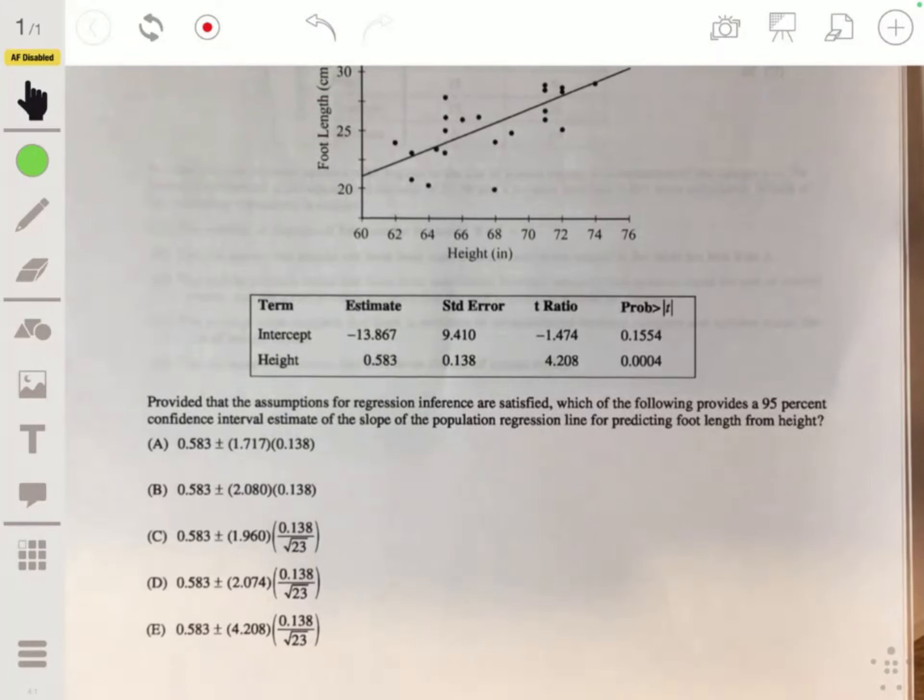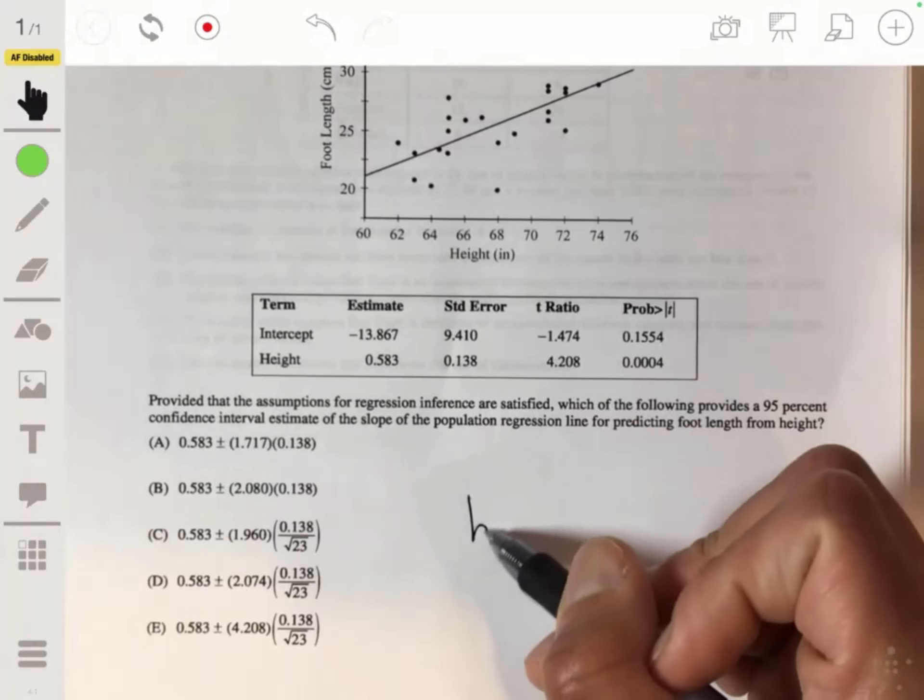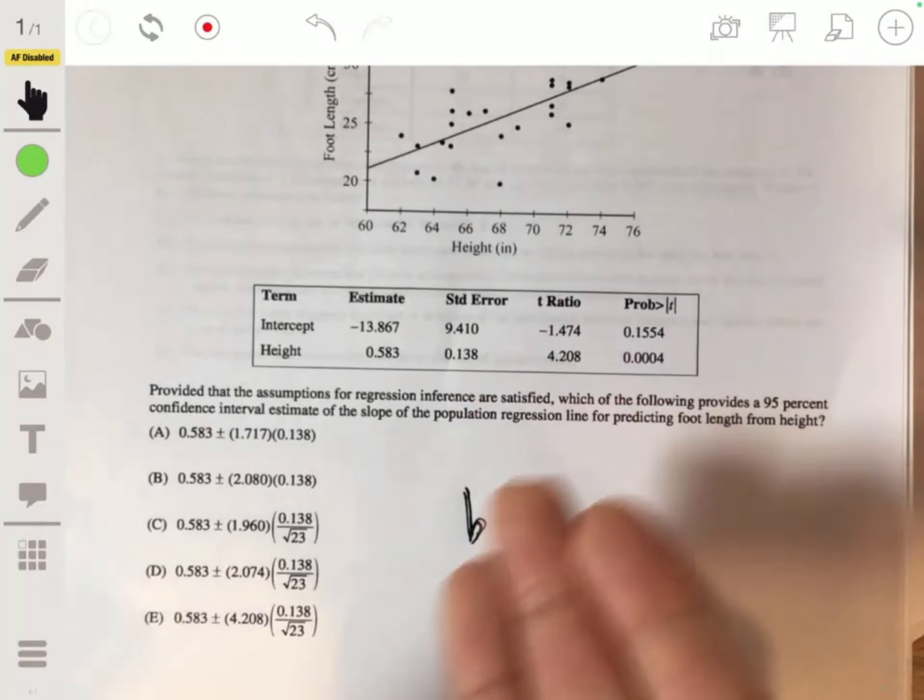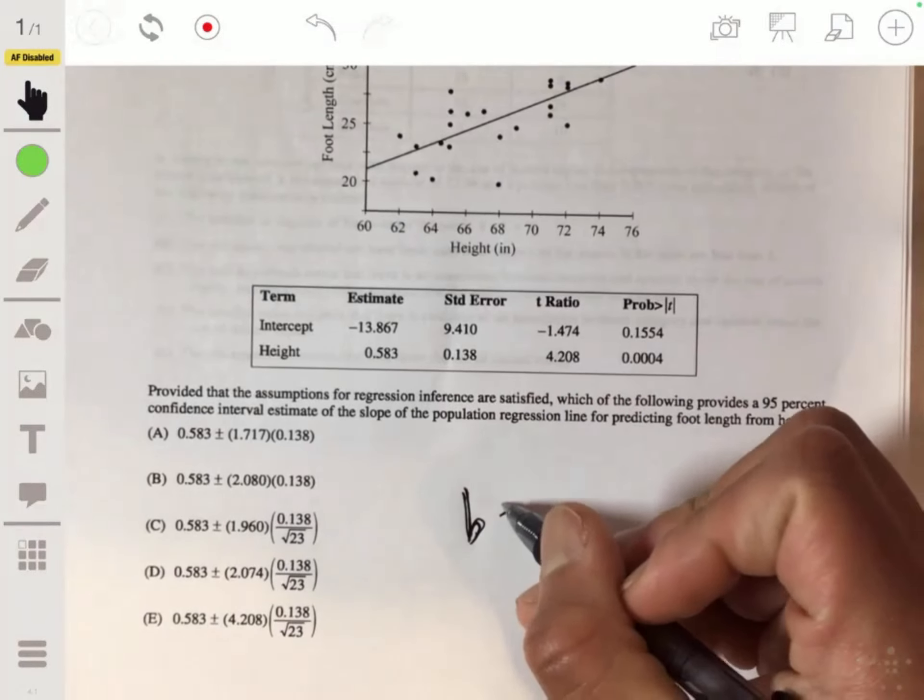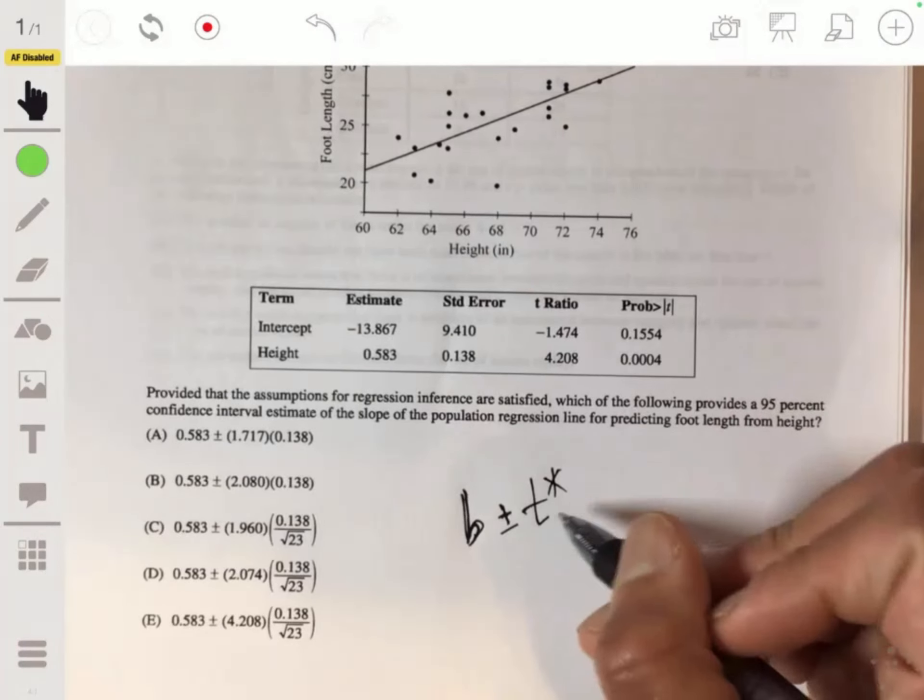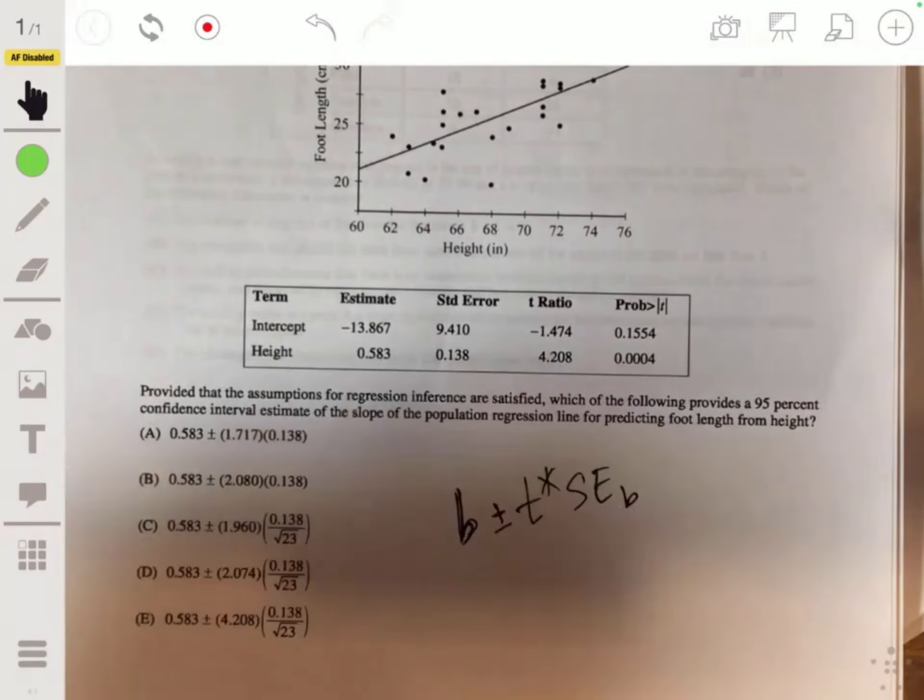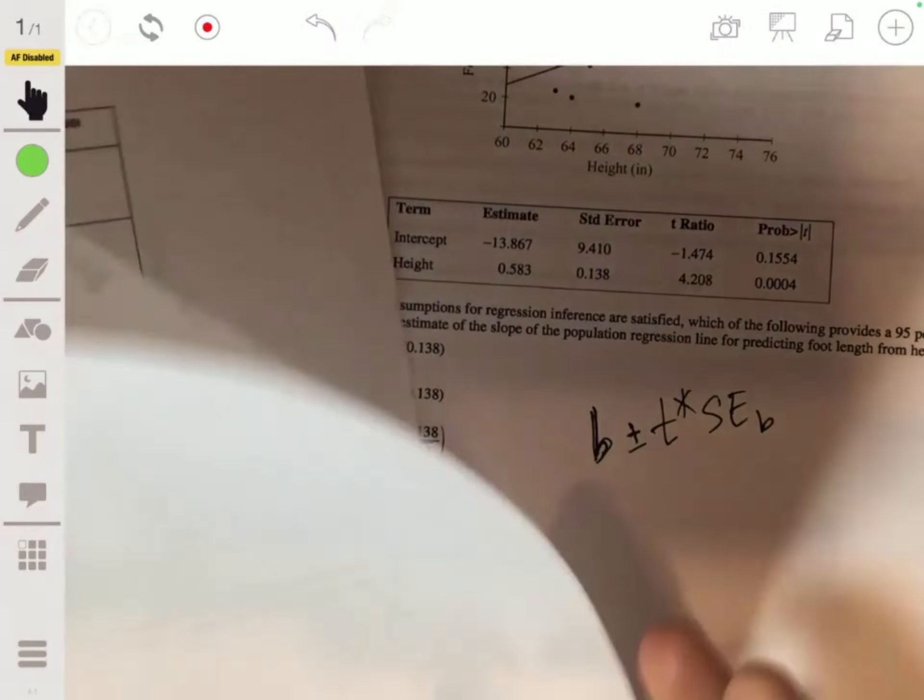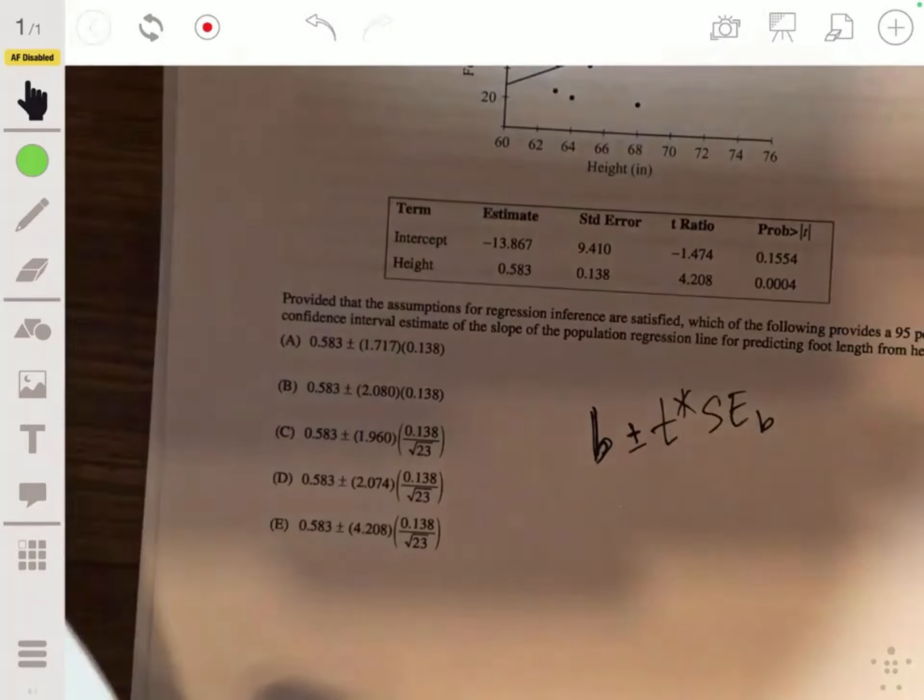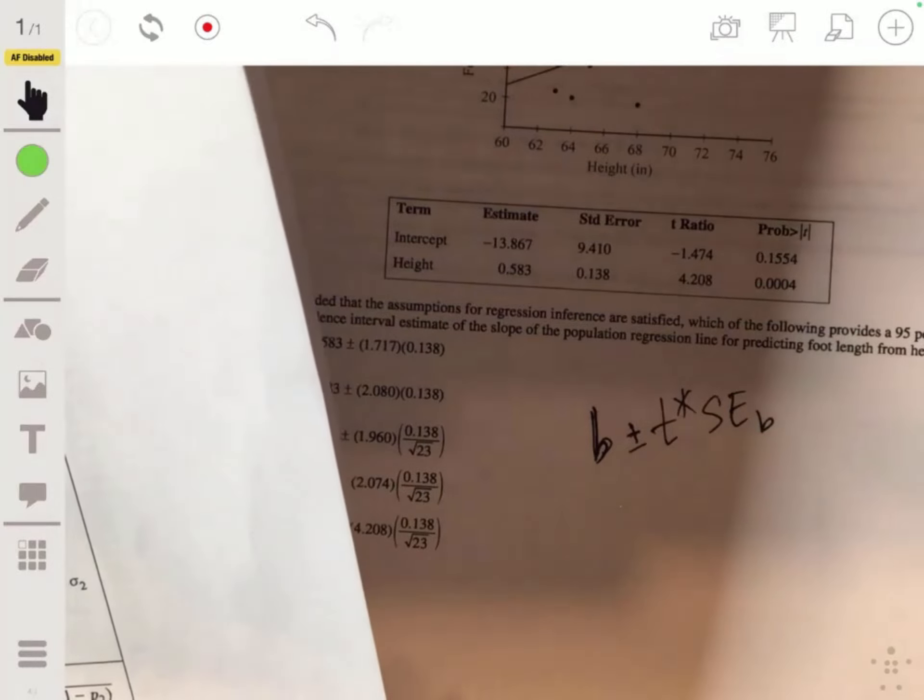Here's our data, here's our scatter plot. Provided that the assumptions for regression inference are satisfied, which of the following provides a 95% confidence interval estimate of the slope of the population regression line for predicting foot length from height? Okay, so remember it's just usually at the end of the book, the last chapter. But you can have just a confidence interval. This is just a confidence interval for a slope. And we tend to use lowercase b for the slope in statistics. And we're going to have our t star times our standard error. I don't think this is in the formula sheet explicitly.